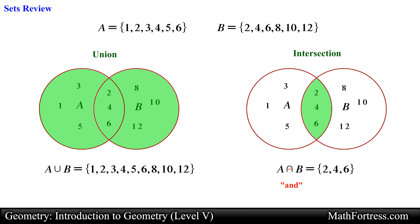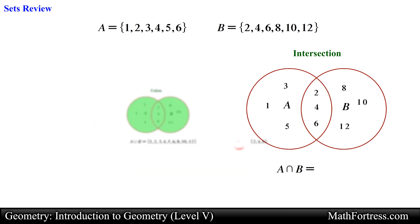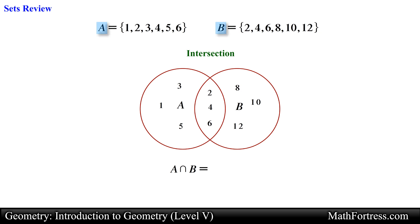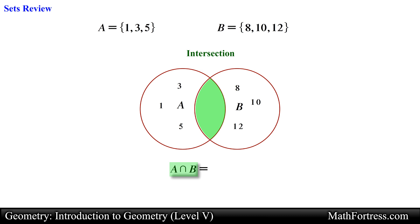Graphically you can see the reason why this is called the intersection between two sets — it's literally an intersection or overlapping of common elements. The final concept we need to be familiar with is the idea of an empty set. If we remove the elements common to both sets and then find A intersection B, we would see that there are no common elements. In this case we would obtain what is referred to as an empty set. An empty set is special in the sense that it contains no elements.